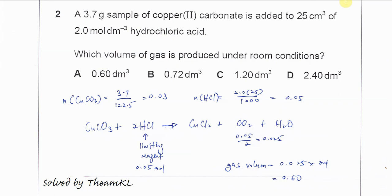For this question you need to find the limiting agent. It's given 3.7 grams of copper(II) carbonate. After you calculate the moles, it's 0.03, so 3.7 over the molar mass. And you need to calculate the moles of HCl used.